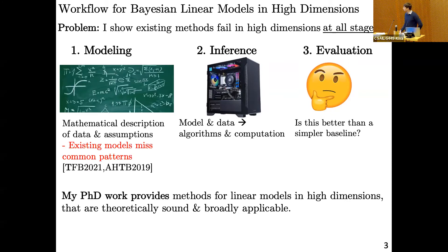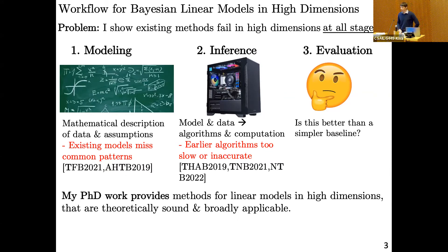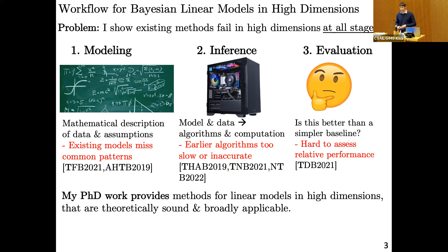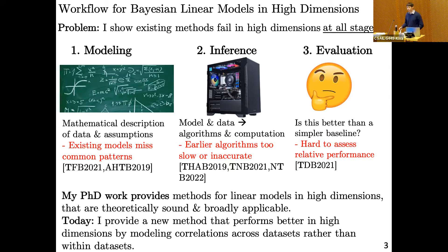To get in a little bit deeper: in modeling, I show that existing models miss patterns that are common in high-dimensional data, so I propose new ones that we know are fast and can prove are accurate. And then in evaluation, many Bayesian methods often rely on subjective assumptions about our data, and it's hard to assess the relative performance between different approaches in high-dimensional settings. So I've worked on coming up with automated criteria that allow one to assess their conclusions in an assumption-lean manner.